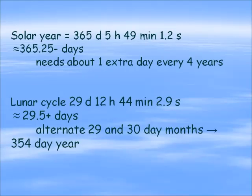The solar year — the time it takes for the earth to rotate around the sun — is 365 days, 5 hours, 49 minutes, and 1.2 seconds. So we're looking at about 365 and a quarter days, a little bit less than that. We need about one extra day every four years. As you know, we have February 29th, as we do this year in 2016. Every fourth year we have an extra day, and then in the round numbers of the hundreds we don't have that day. This keeps us very, very close to the actual cycle of the earth going around the sun.